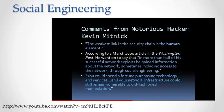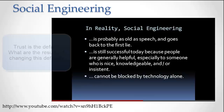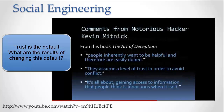These are the simple definitions for what a social engineer does, but how is it we are so easily tricked? Well, social engineering is not a new thing at all. In reality, it's probably as old as speech, and goes back to the first lie itself. Social engineering is still successful today because people are generally helpful, especially to someone who is nice, knowledgeable, and or insistent. And remember, social engineering cannot be blocked by technology alone. In fact, Kevin Mitnick from his book The Art of Deception brings out that people inherently want to be helpful and therefore are easily duped.